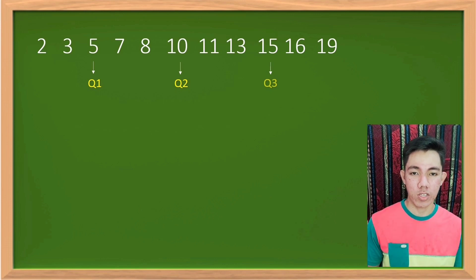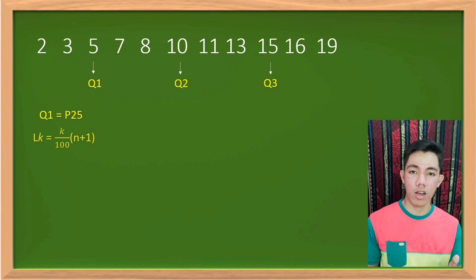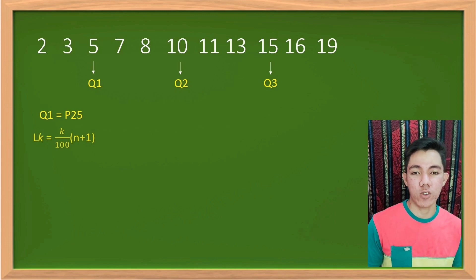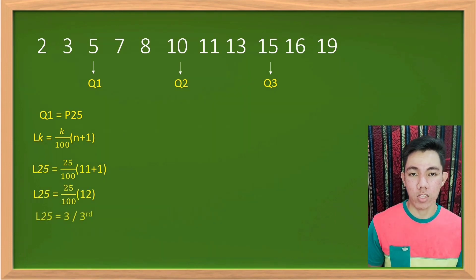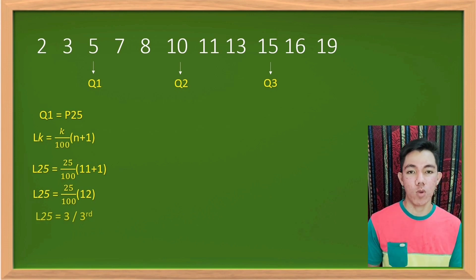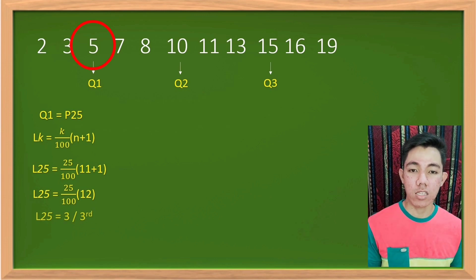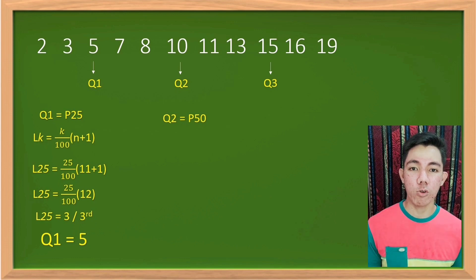But why is Q1 equal to 5? We have a formula: the location L_k = (k/100) × (n+1), where k is the given percentile and n is the total number of data. Since Q1 is the 25th percentile, we compute L₂₅ = (25/100) × (11+1) = (25/100) × 12 = 3. So Q1 is the value at the 3rd position in the data set, which is 5.